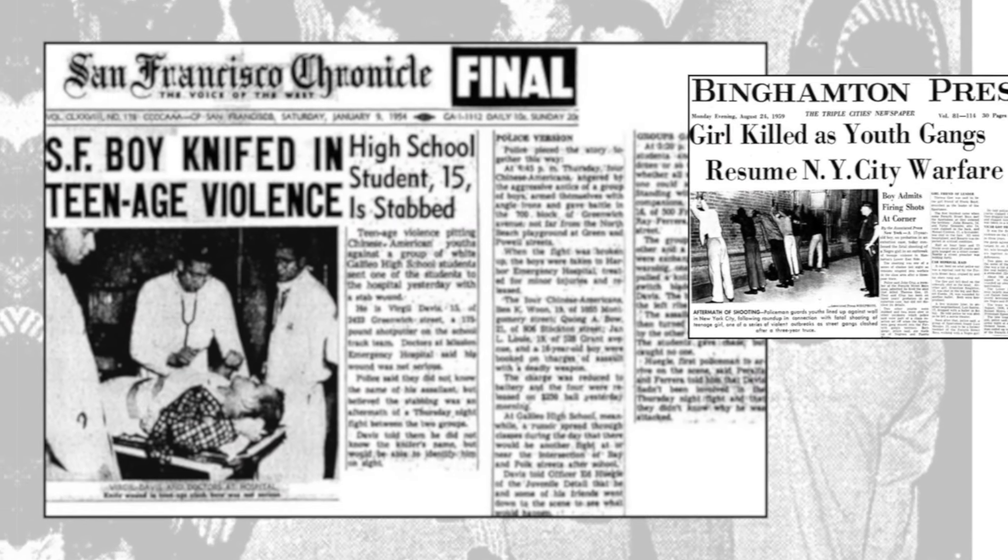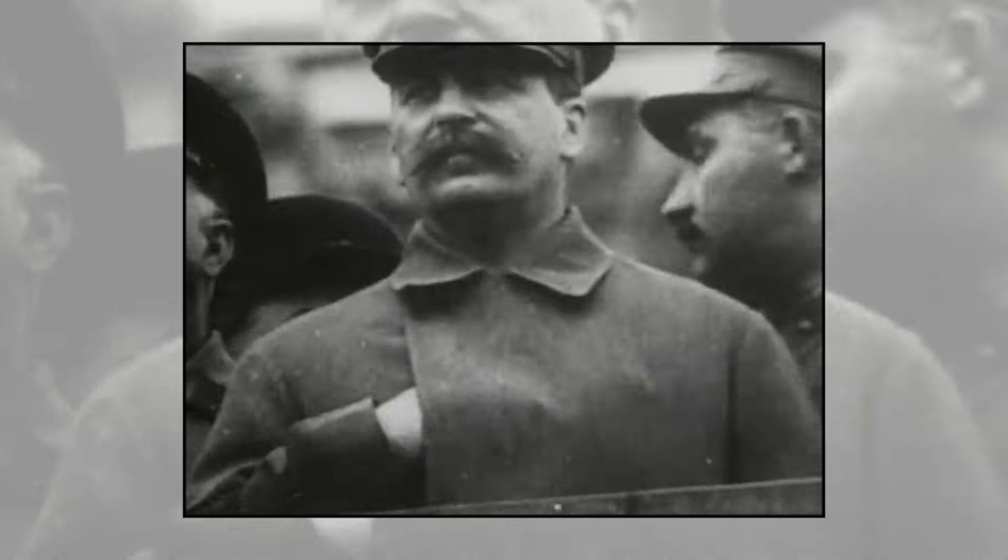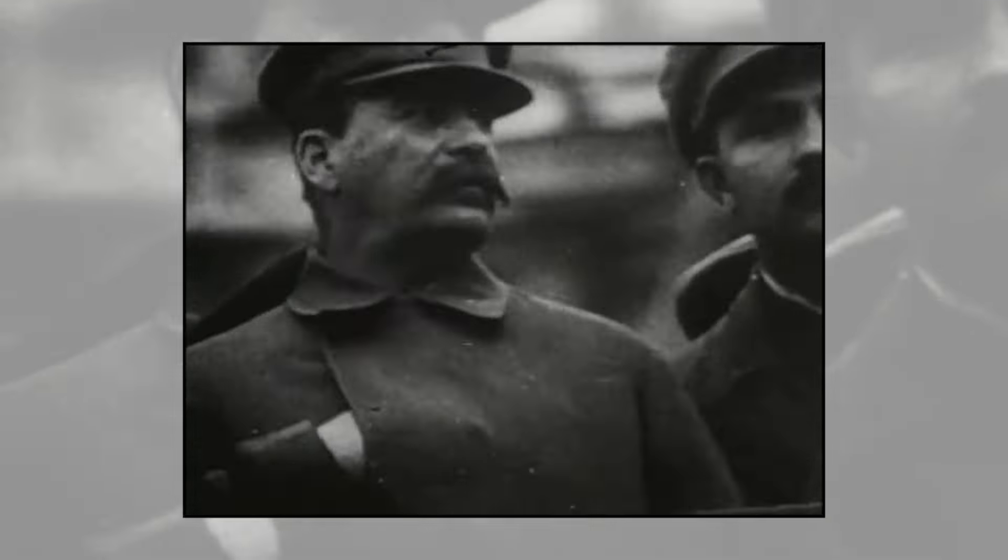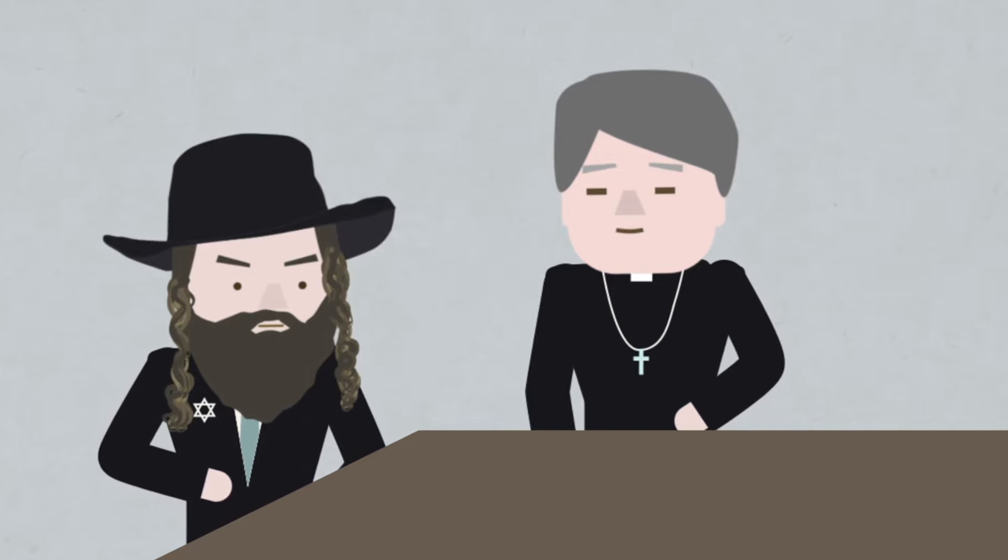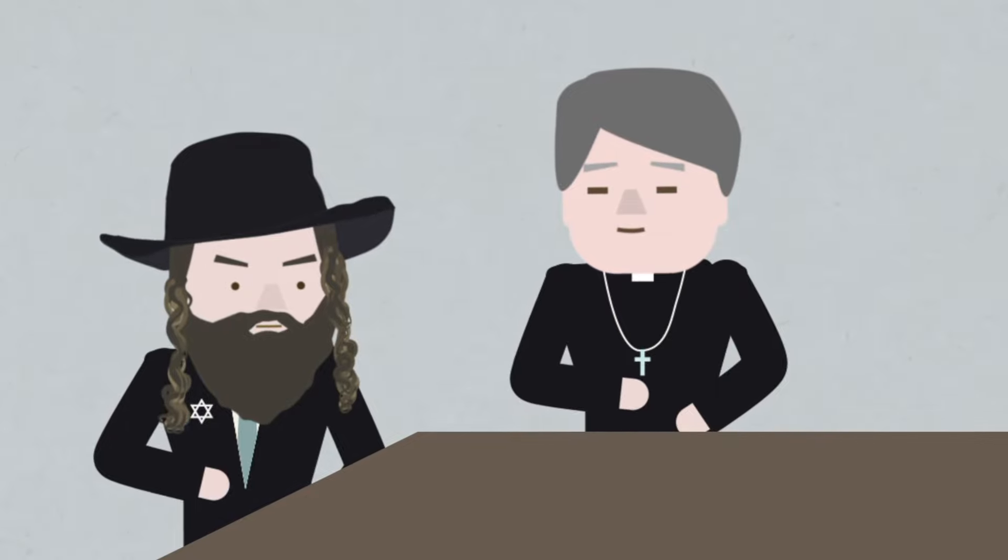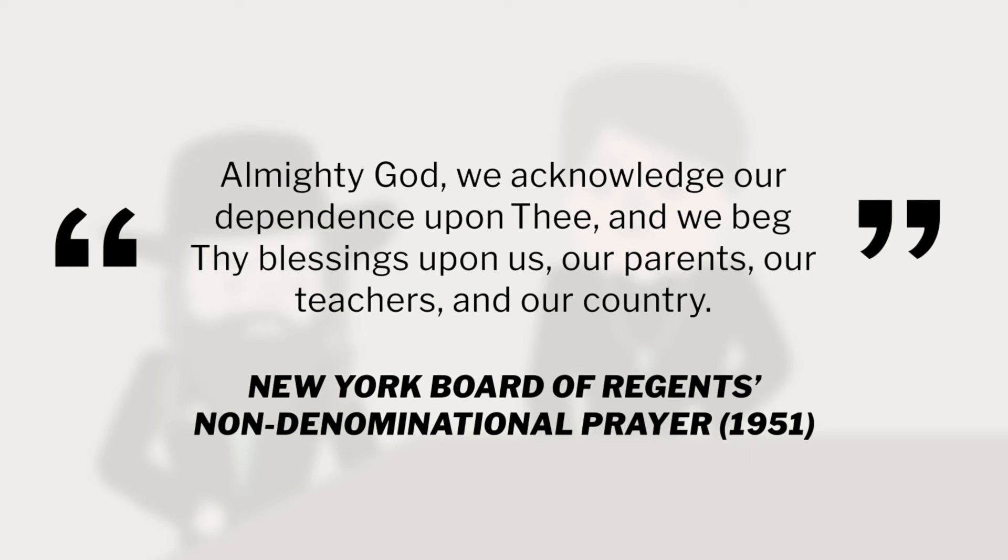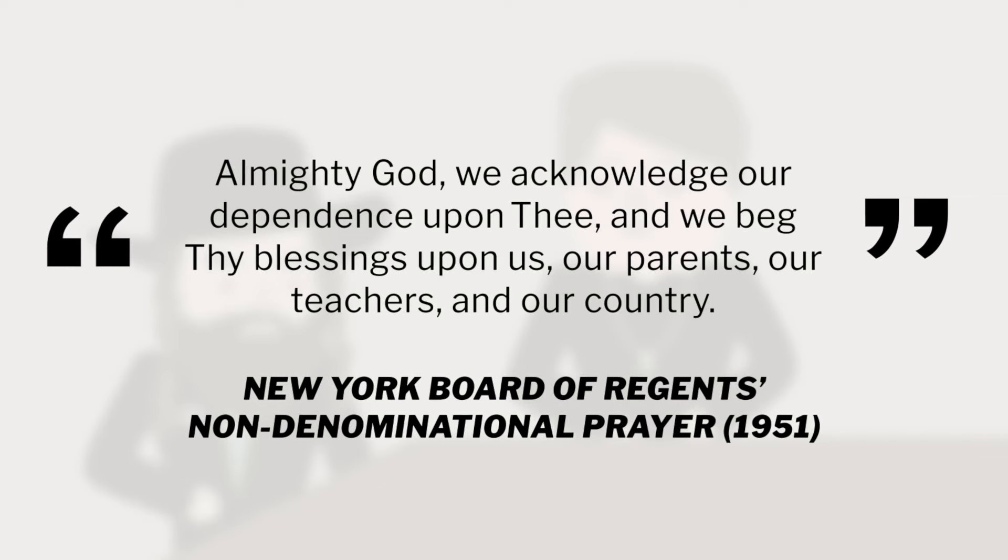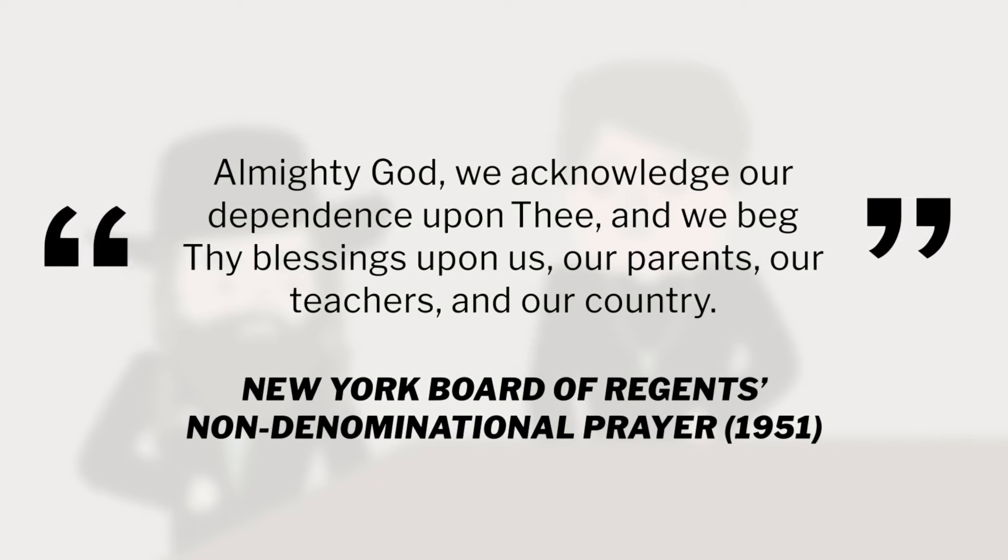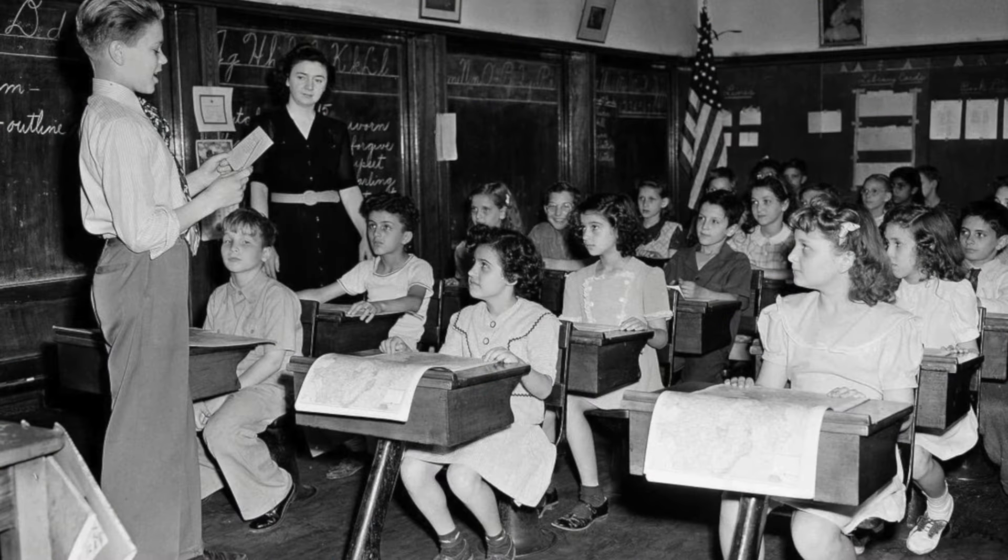In the early 1950s, an alarming rise in juvenile delinquency, as well as fears about the Cold War struggle against the atheist Soviet Union, led to the New York Board of Regents crafting a school prayer. A committee of ministers from a variety of Christian denominations and Jewish rabbis formulated a 22-word non-denominational prayer that read: Almighty God, we acknowledge our dependence upon thee, and we beg thy blessings upon us, our parents, our teachers, and our country. The prayer would precede the Pledge of Allegiance every morning. The Board of Regents recommended it to local school districts in the state but did not require its adoption.